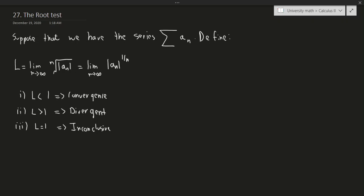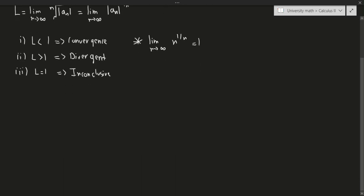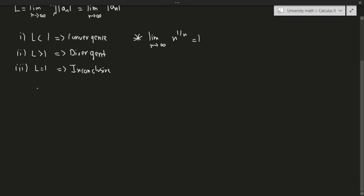As a final reminder, this is one limit that might be important going forward: the limit as n goes to infinity of n to the 1 over n is equal to 1. You can prove this rigorously using L'Hôpital's rule by converting to a natural log. But this is a useful limit to know, and it will be useful in a later example.